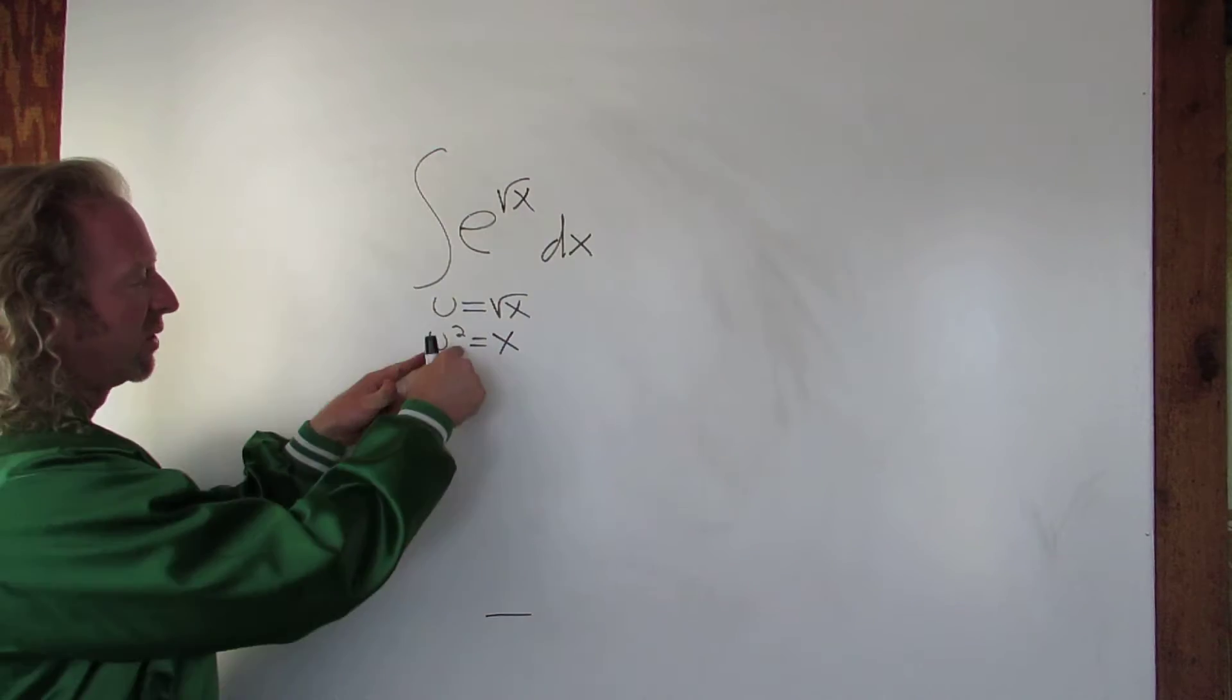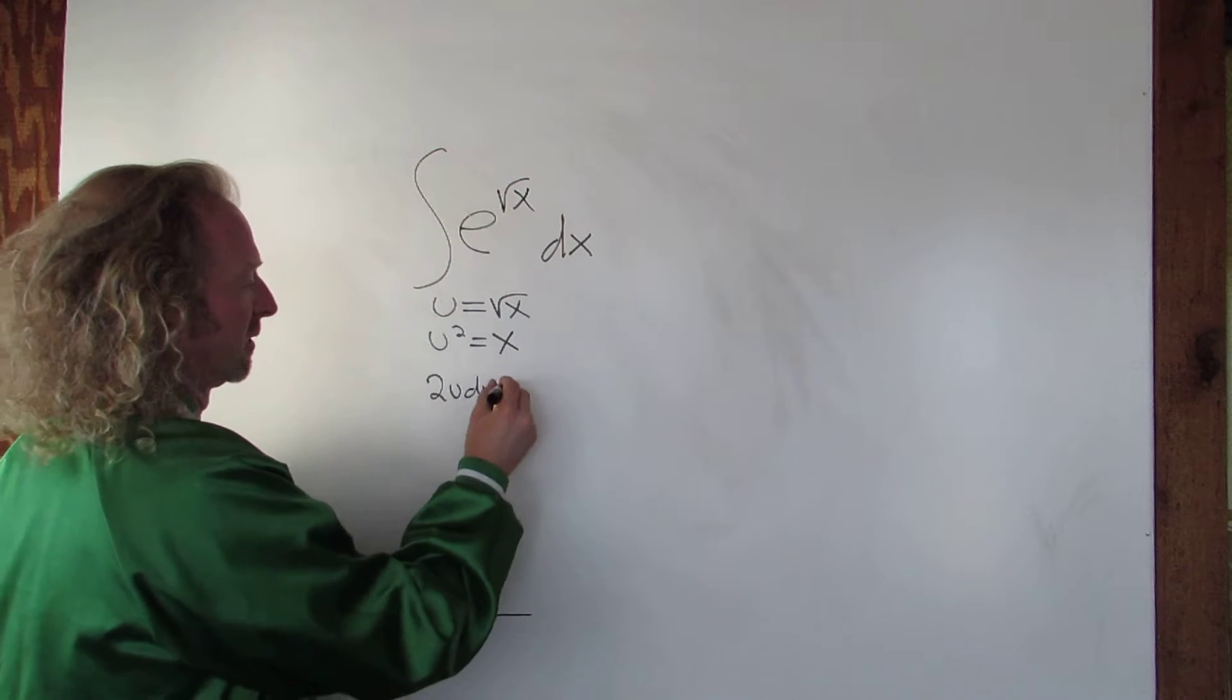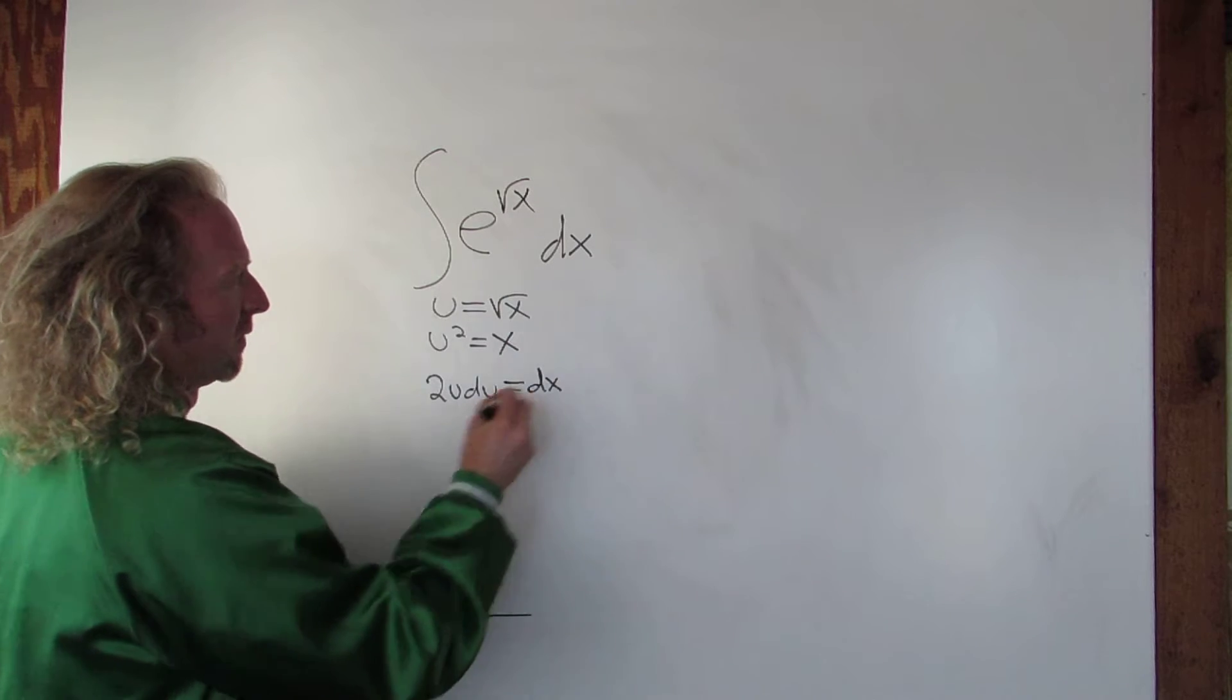Now we'll take the derivative. So here the derivative will be 2u du, and then here it's just dx.